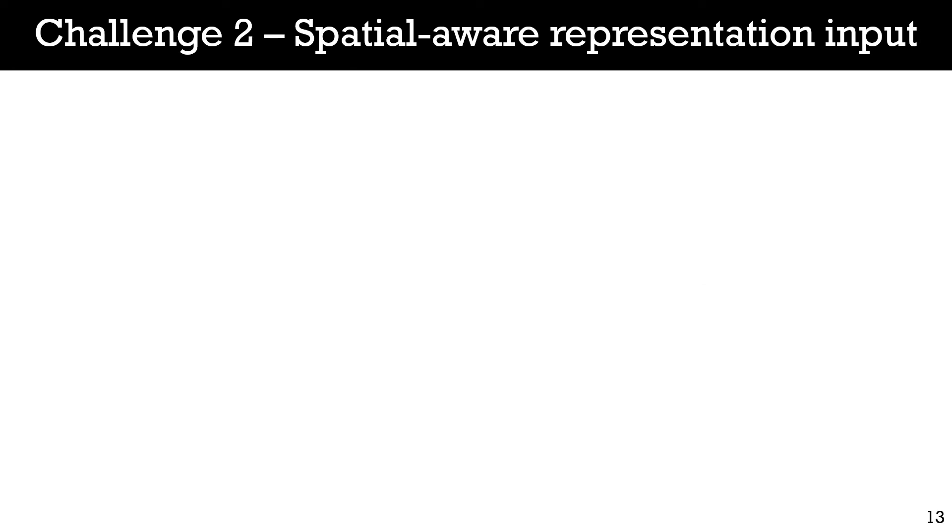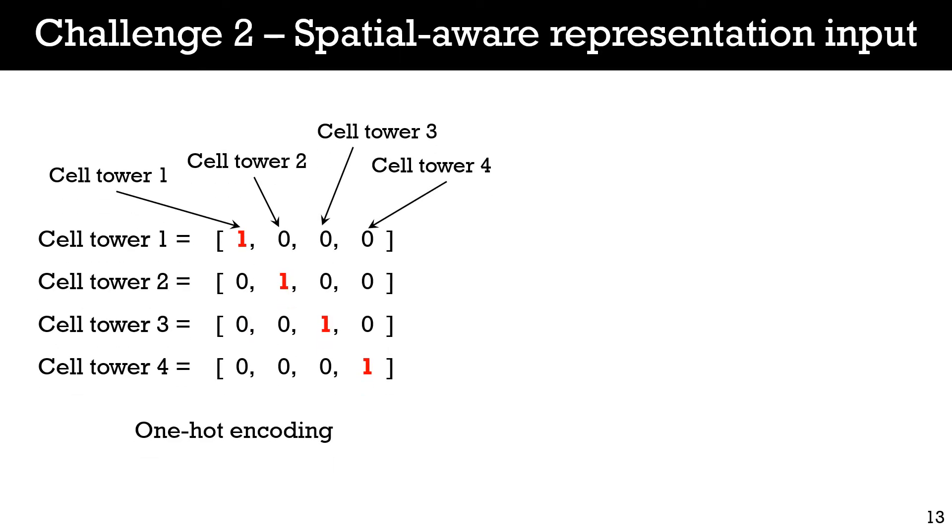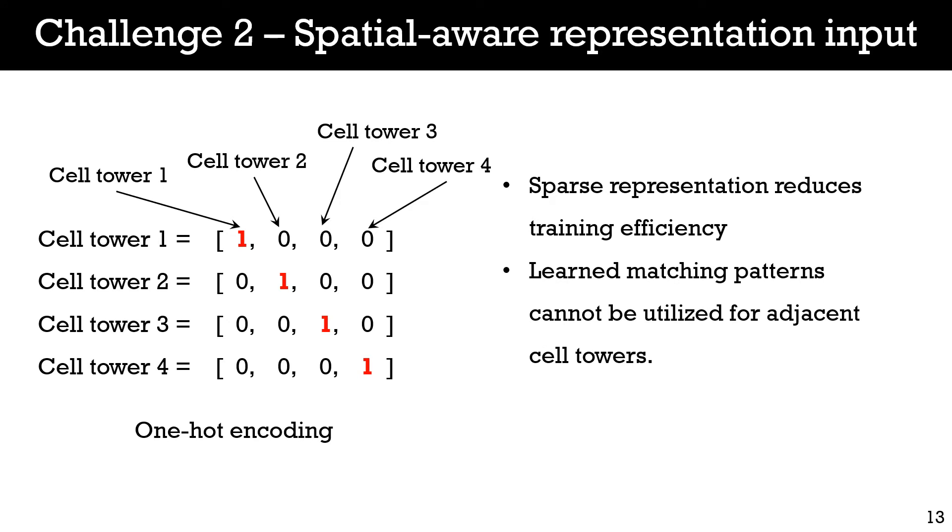For the second challenge, recurrent neural network-based models require vector representations for input cell towers. A classic approach is to use a binary vector to represent a cell tower, in which all bits are 0 except 1 bit is 1, referring to the specific cell tower. However, this technique suffers from two drawbacks. First, the sparse representation reduces the training efficiency of the map matching model, especially in environments with a large number of cell towers. Second, the learned map matching pattern cannot be utilized for the surrounding cell towers.